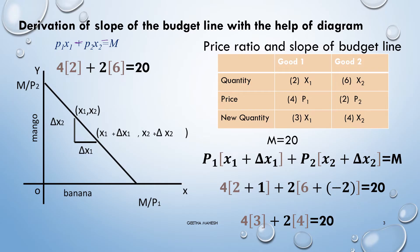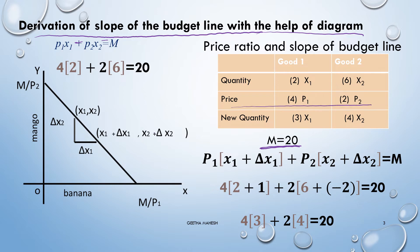Dear students, after knowing the price ratio we can easily understand the derivation of the slope of the budget line with the help of a diagram. Assume that the income of the consumer is given and the prices of both the goods are given. The consumer is in the combination of X1 and X2.